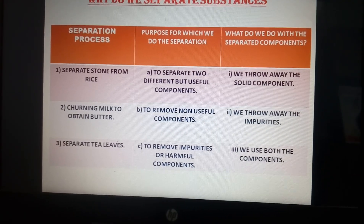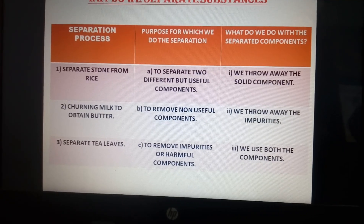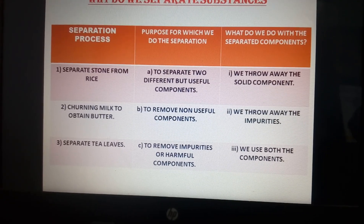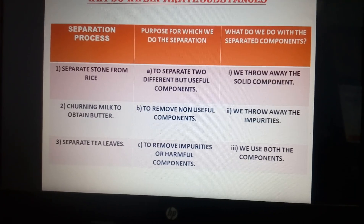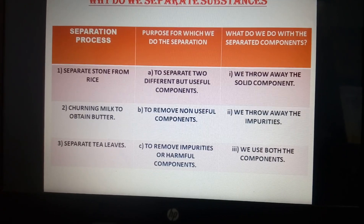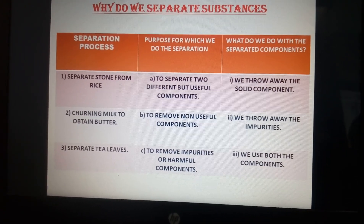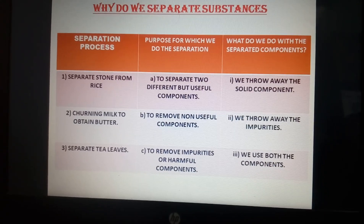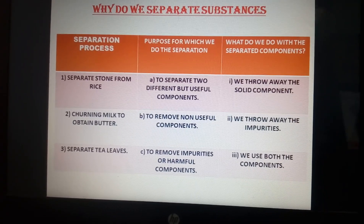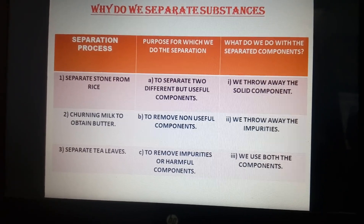The purpose for which we do the separation is to remove non-useful components, and what do we do with the separated component? We throw away the impurities. The third example is to separate tea leaves — as we were talking about — to remove impurities or harmful components.